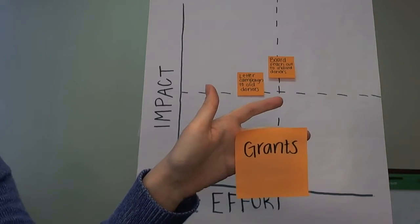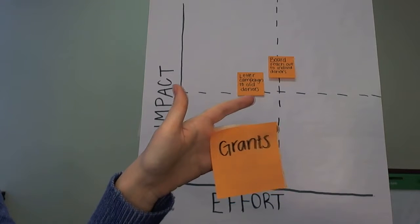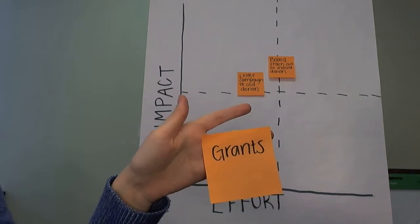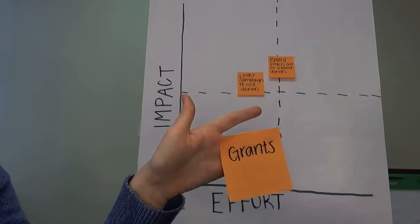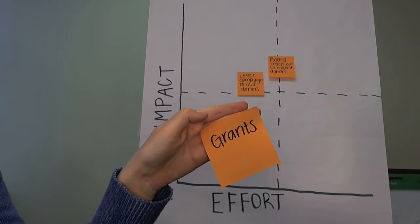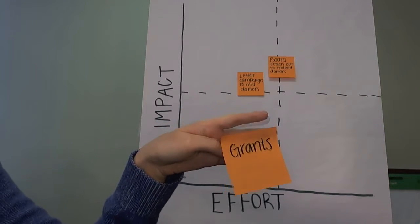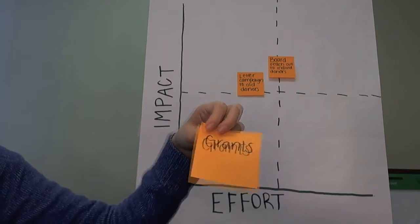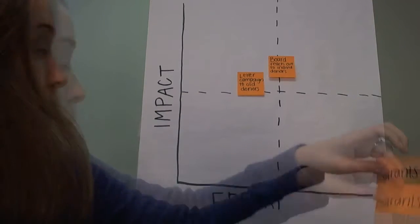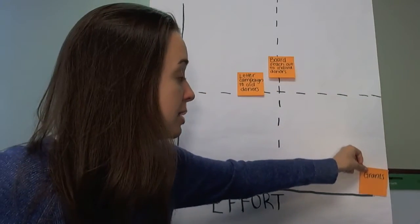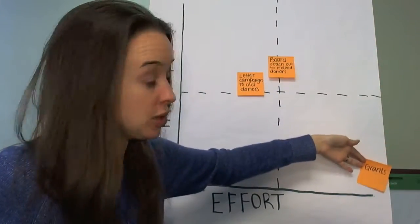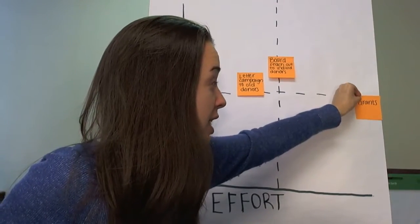The next suggestion is grants. When brainstorming, you'd ideally have specific grants in mind — like the ASOS grants — and want to be very specific rather than caught up in generalities. Grants take a lot of effort and sometimes don't come through. We would say that is extremely high effort, especially if we don't have a big development department. The impact can be big if we win them, but very low if we don't, so we'll put that right in the middle — a big question mark.